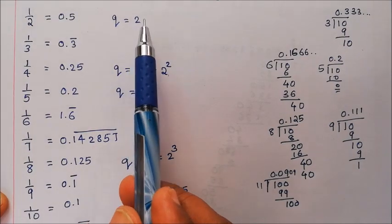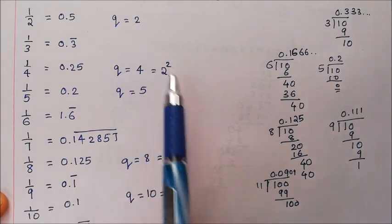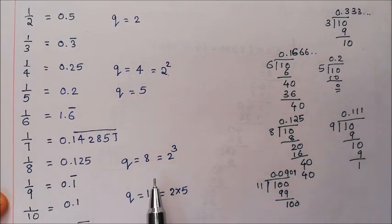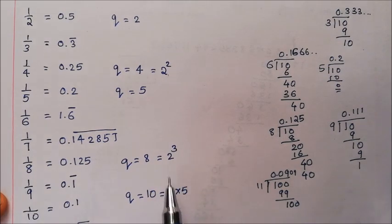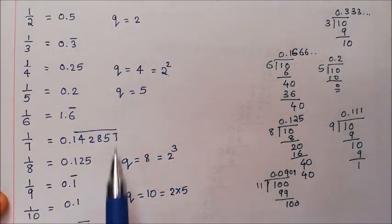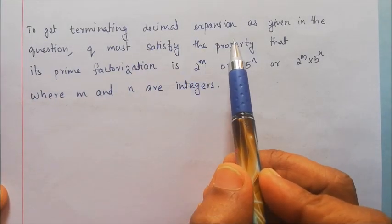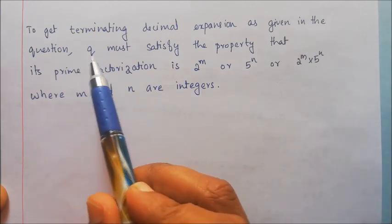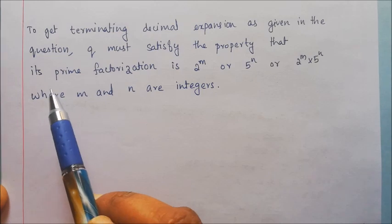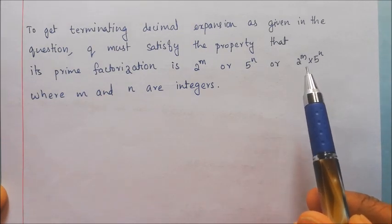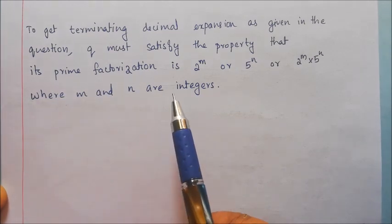The pattern is 2 raised to n and 5 raised to n, where n is any integer. To get a terminating decimal expansion as given in the question, q must satisfy the property that its prime factorization is 2 raised to m, or 5 raised to n, or 2 raised to m into 5 raised to n, where m and n are integers.